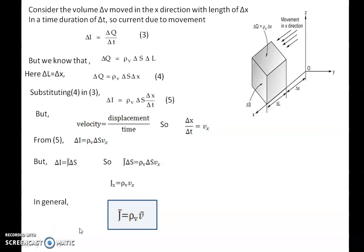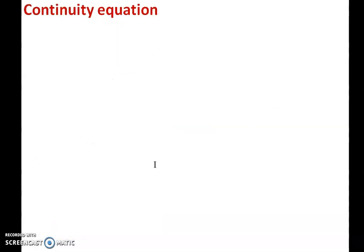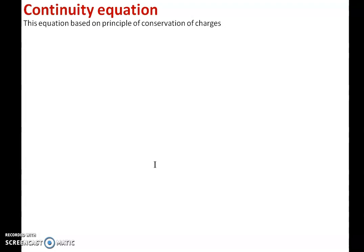Next, we will see what is the continuity equation. The continuity equation is mainly based on the principle of conservation of charges. This principle states that charges cannot be created or destroyed. We also know that the current equation with respect to current density can be written as i equals the surface integral of J dot dS, where current is considered as the flow of positive charges.